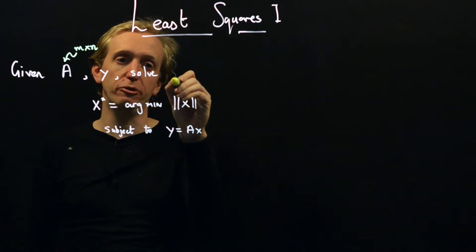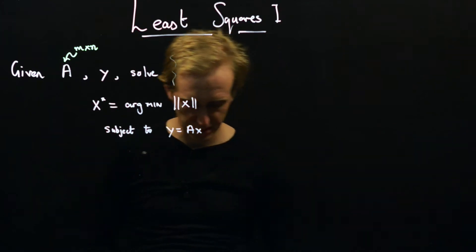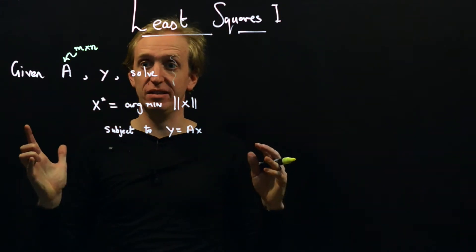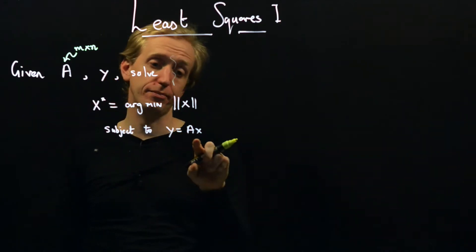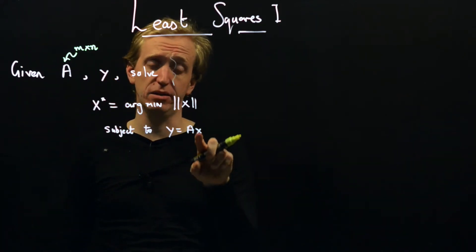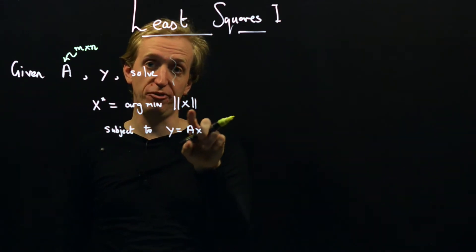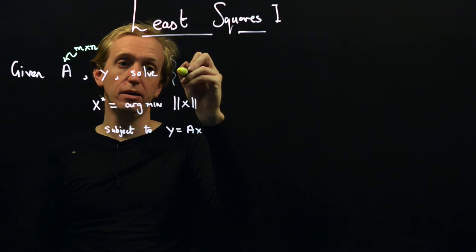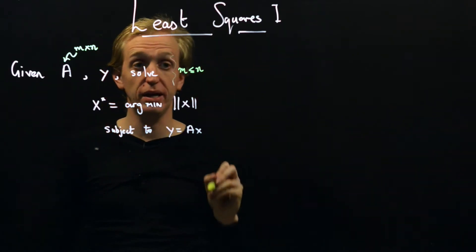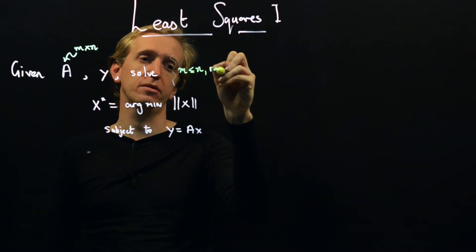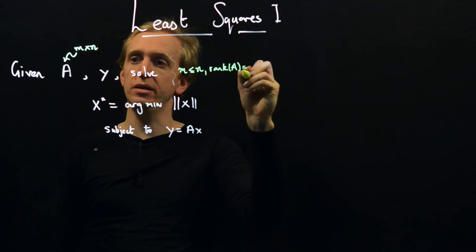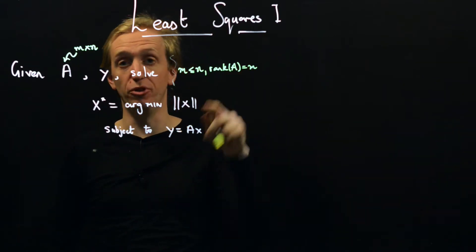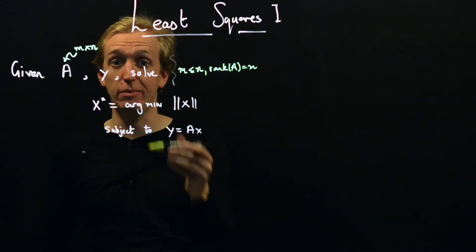Our matrix A is fat — short and fat. What does that mean? It means that for any y there will likely be lots of vectors x that solve the equation y equals Ax, and we want to find the smallest one. A being short and fat means M is less than or equal to n, and we're also going to assume that the rank of the matrix A is equal to M — so we've got lots of columns, but M of them are independent, or equivalently the matrix A has M independent rows.